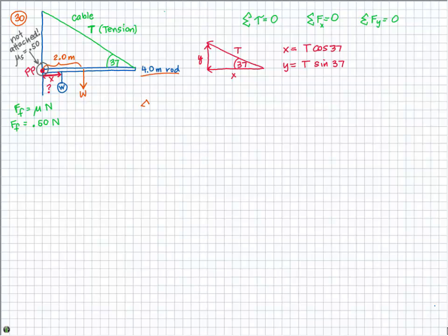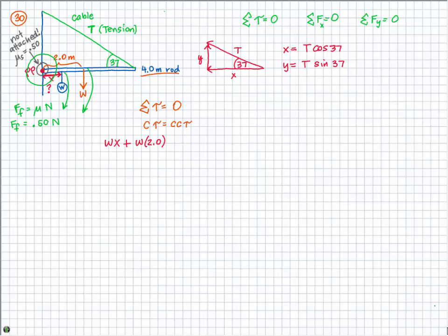Let's look at the sum of all the torques. Because it's in equilibrium, the sum of all torques equals zero, meaning clockwise torques equal counterclockwise torques. With the pivot point on the left at the wall, the weight of the ball creates clockwise torque and the weight of the rod creates clockwise torque. So the clockwise torque is W times x plus W times 2.0 meters, which is half the length of the rod. Nothing else creates clockwise torque.